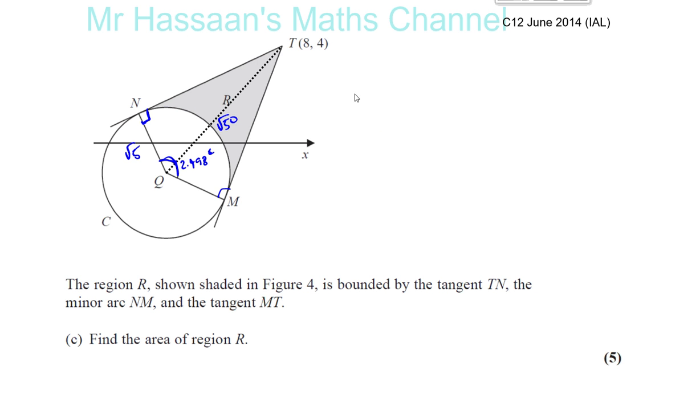You've got something that looks like this, and you've got like this kite shape, which is made up of these two identical triangles, minus the area of this sector. And that will be the shaded region.